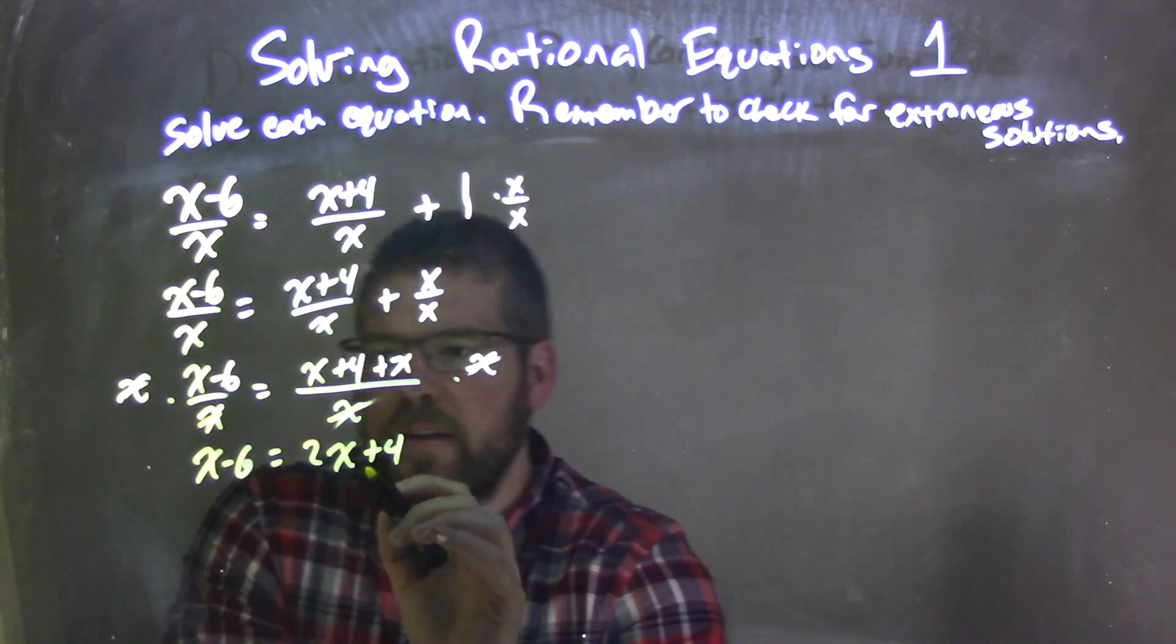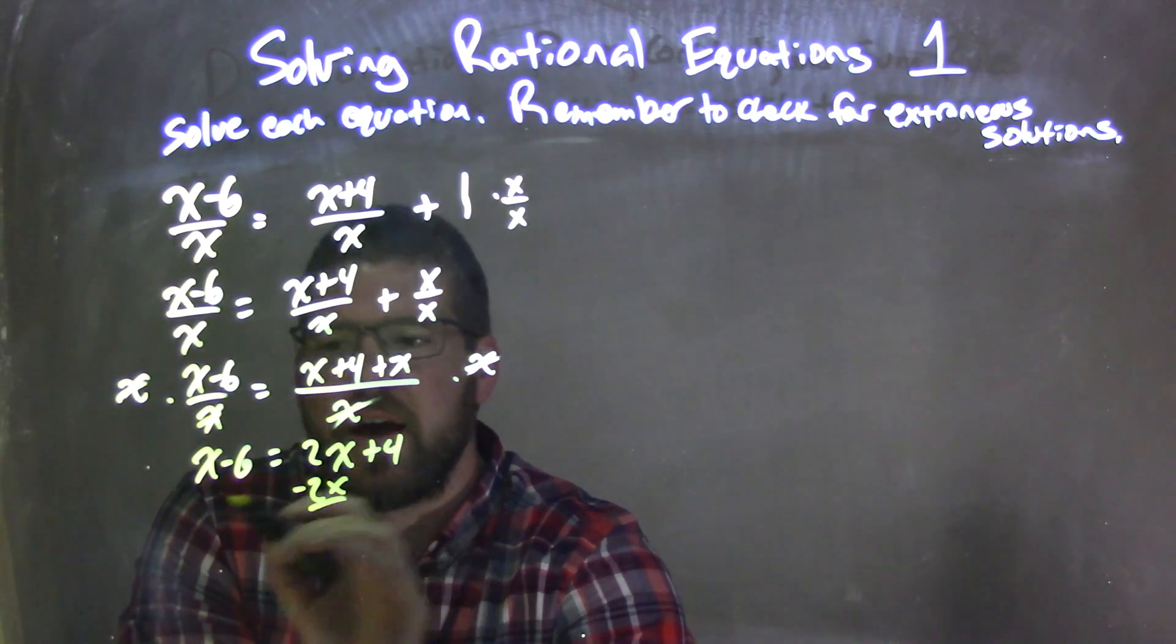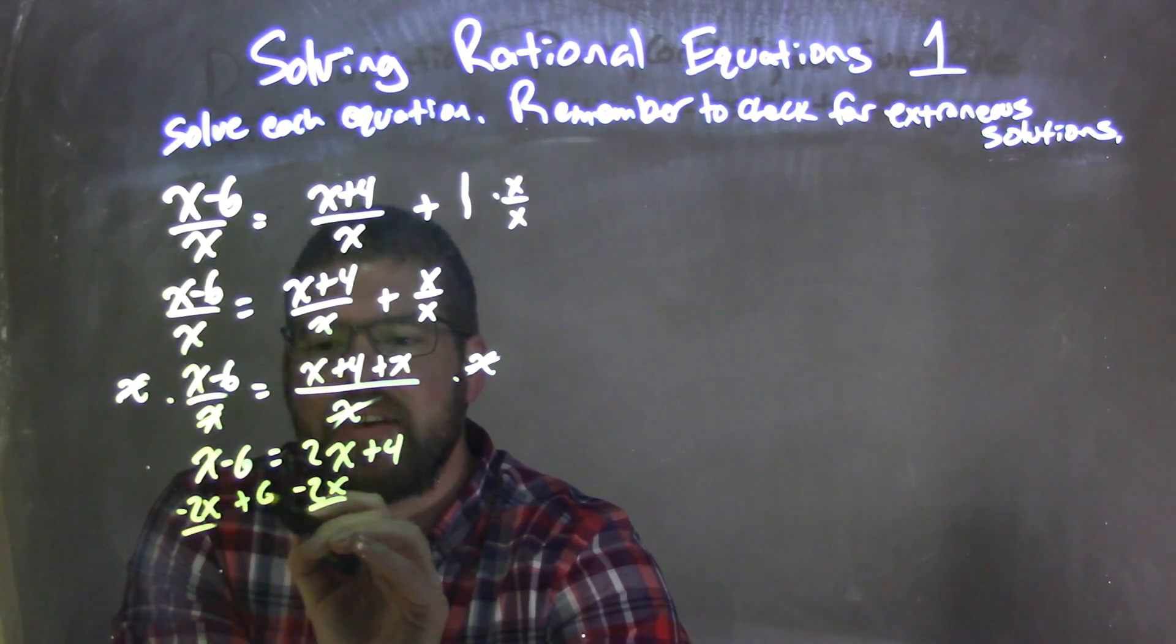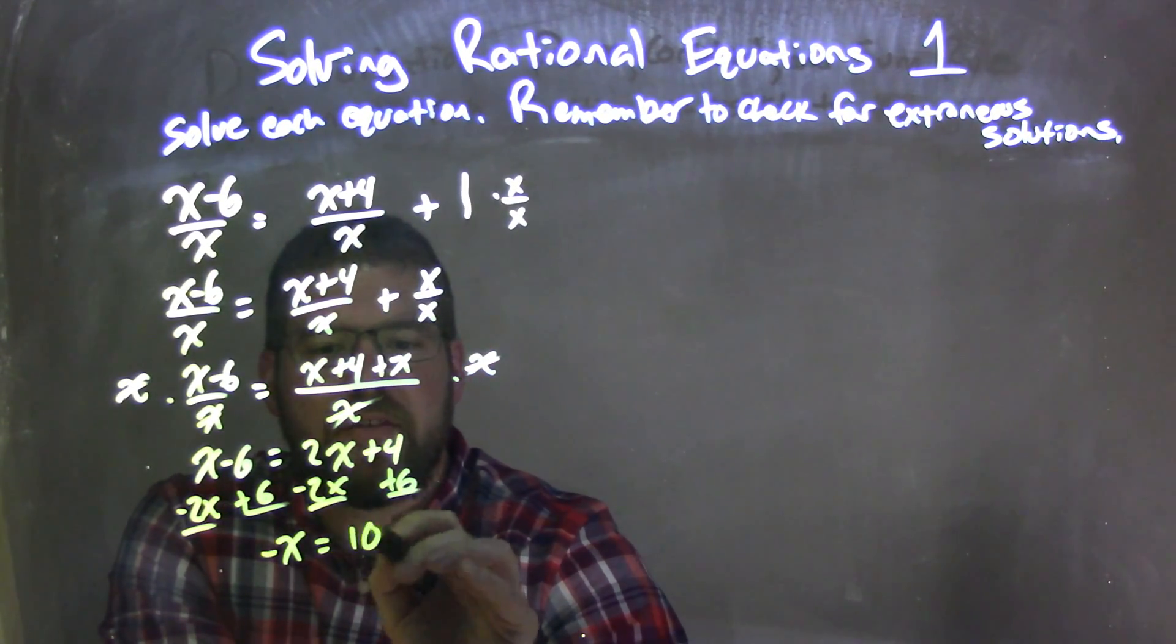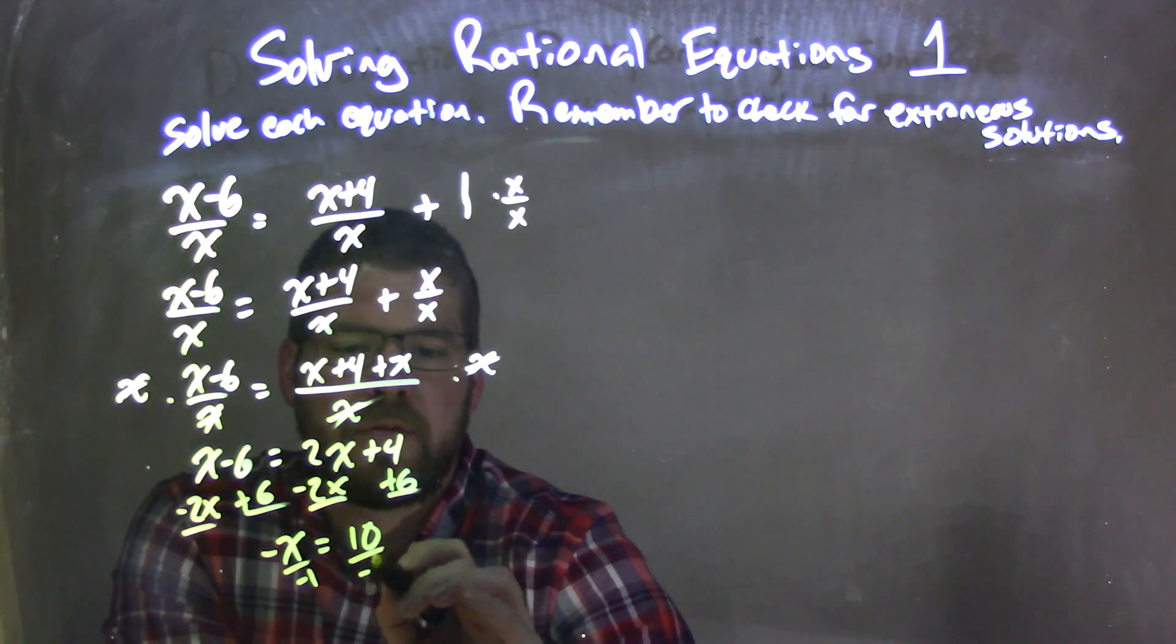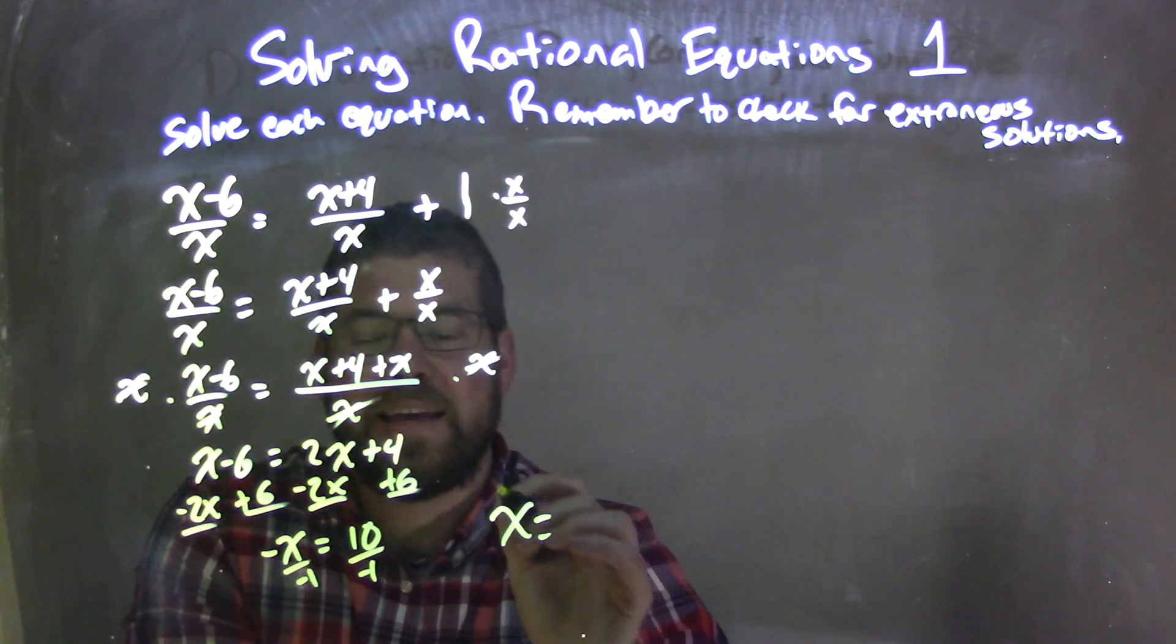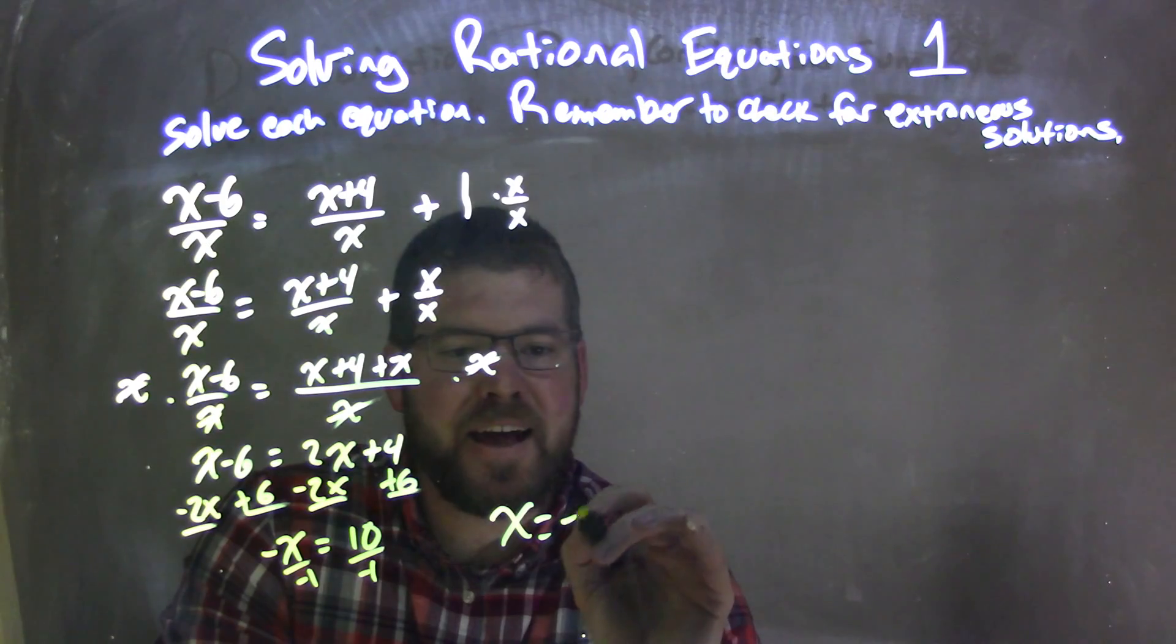So now let's bring our x's together. So I'm going to subtract 2x of both sides, and I'm going to add 6 to both sides. That leaves me with x minus 2x is a negative x equals a positive 10, divided by negative 1 to both sides, and I have x by itself here as a negative 10.